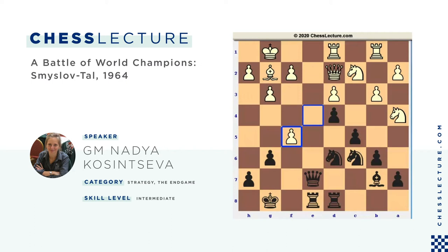Instead, black plays Ne5! It's easy to miss this move if you don't consider alternatives. Always consider alternatives — many players would play Nf5 automatically because it looks so natural, take and retake. But Ne5 is the more concrete move; it creates a specific threat. Black wants to trade the light-squared bishops and then play Qb7 followed by Nf3. As I said at the beginning, black planned to attack the white king.